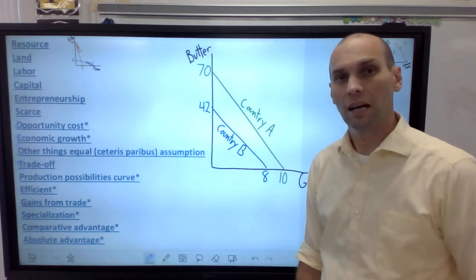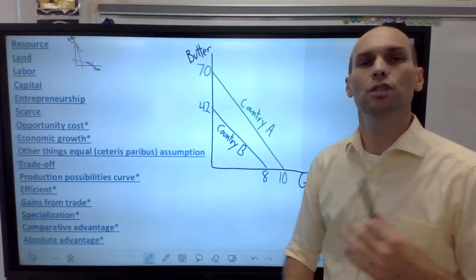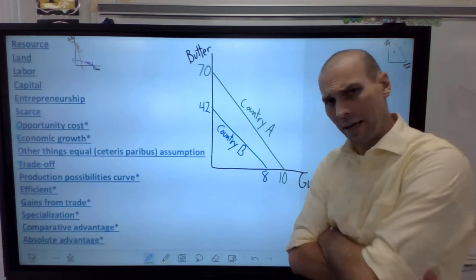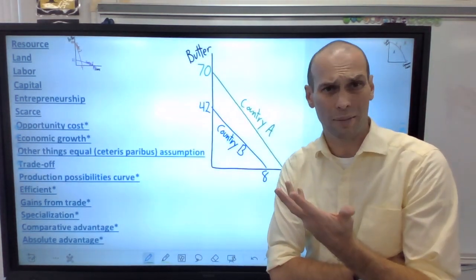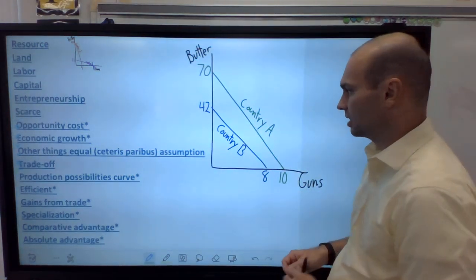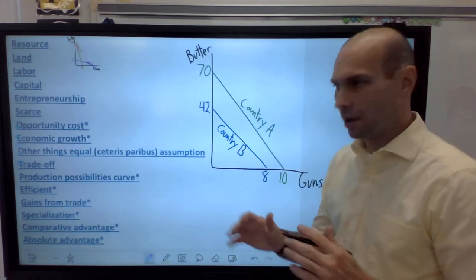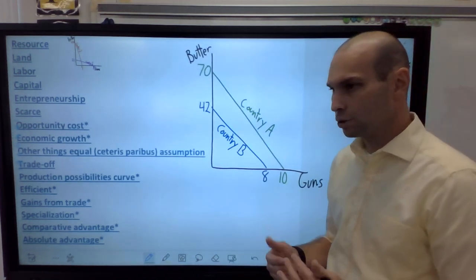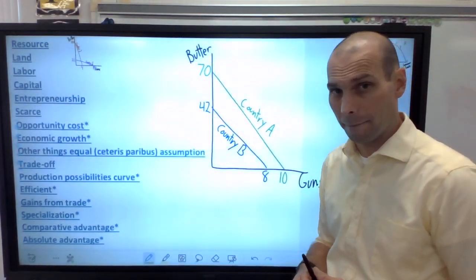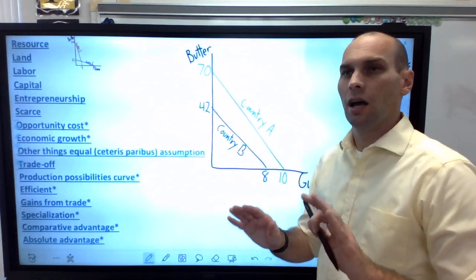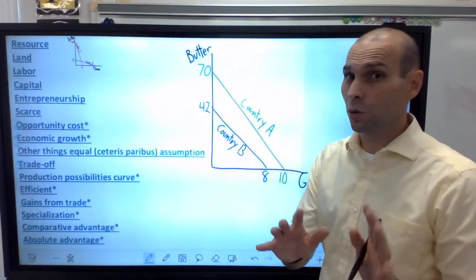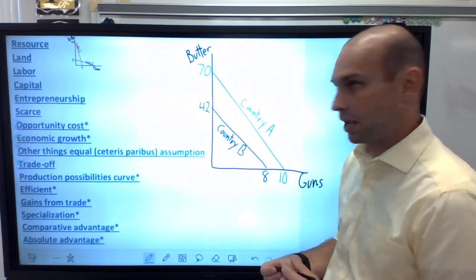Now you see absolute advantage. And what's really easy is if both countries have a different absolute advantage, they also have the same comparative advantage. So what this means is, I have country A and country B. Country A makes 70 butters while country B has 42. Country A makes 10 guns while country B makes 8. So who has the absolute advantage? Well, the answer is country A has the absolute advantage in both. That's tricky. However, comparative advantage is what really determines whether countries will trade with each other.